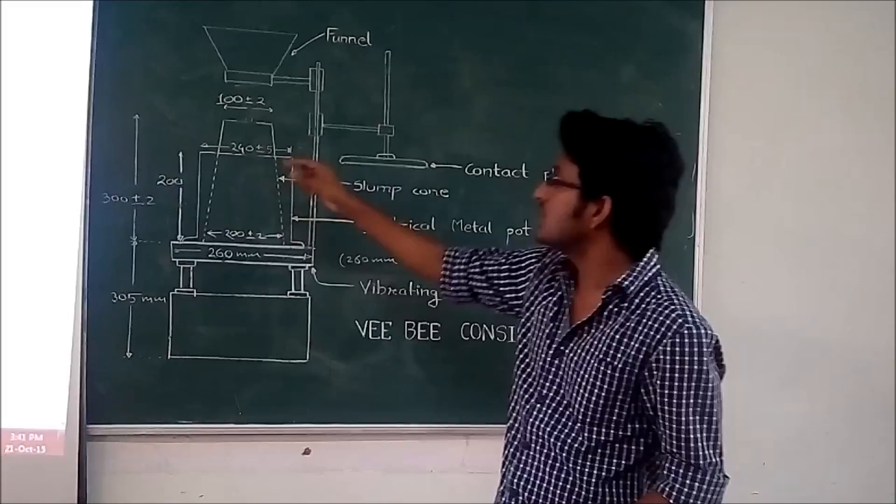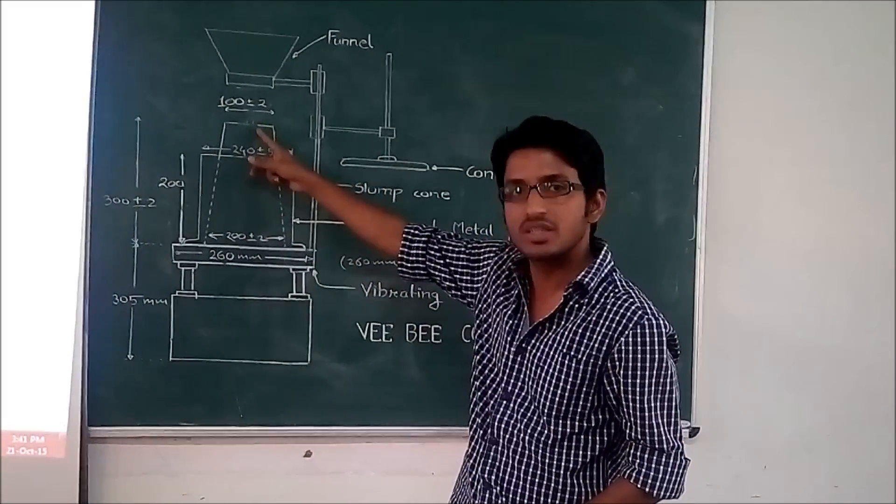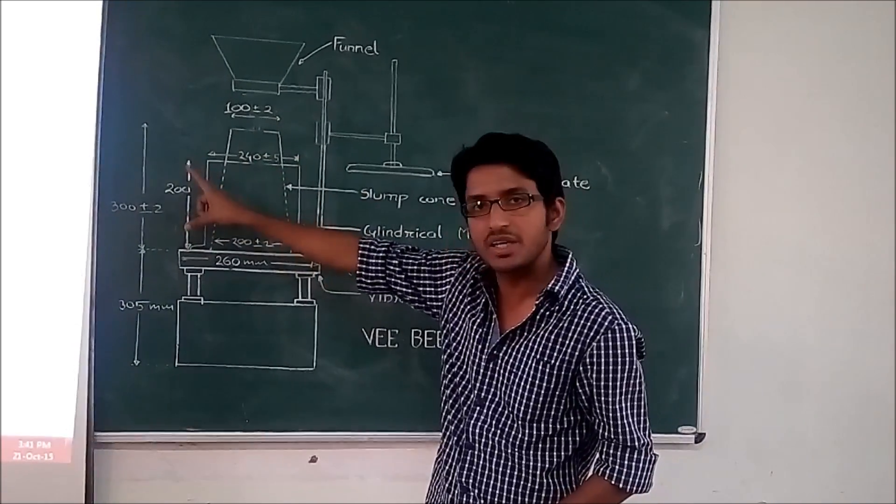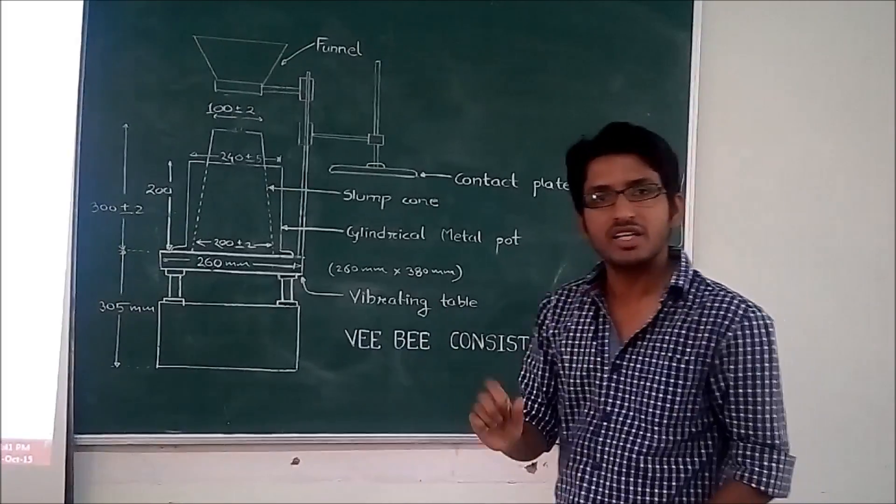Then slump cone. The bottom diameter is 200 plus minus 2 mm. The top diameter is 100 plus minus 2 mm and its height is 300 plus minus 2 mm. Then for this experiment, we will use a standard tamping rod.